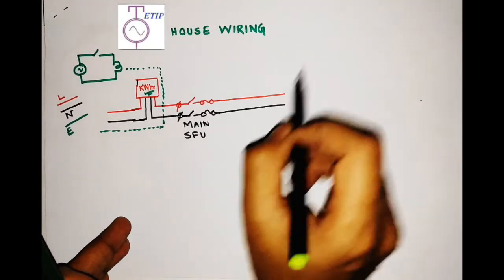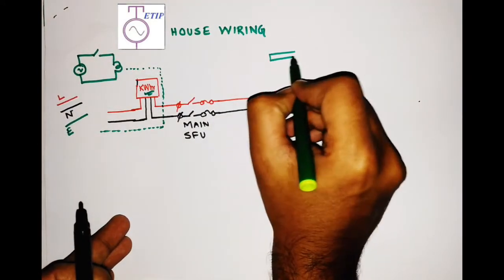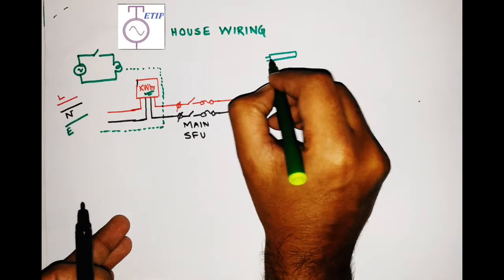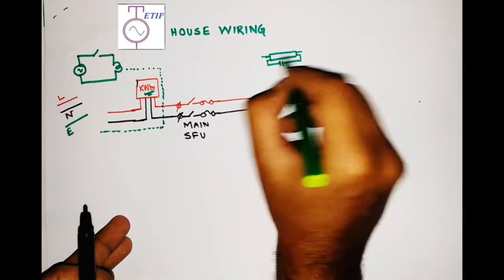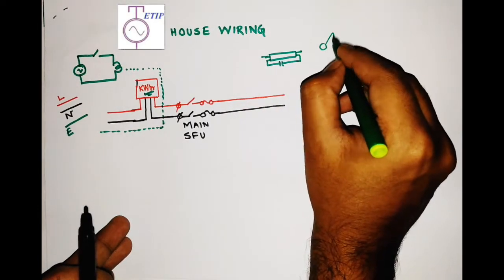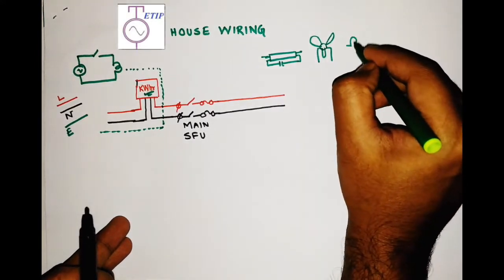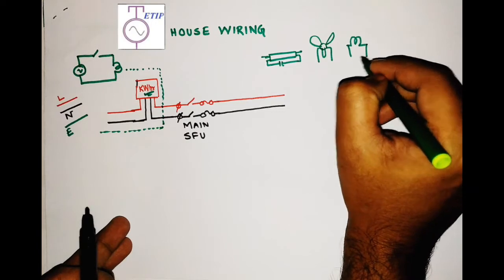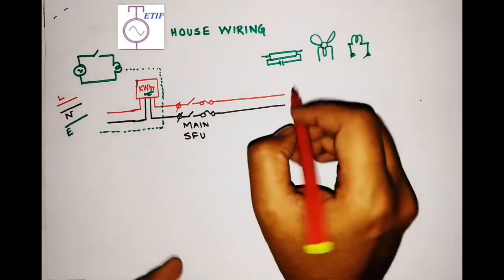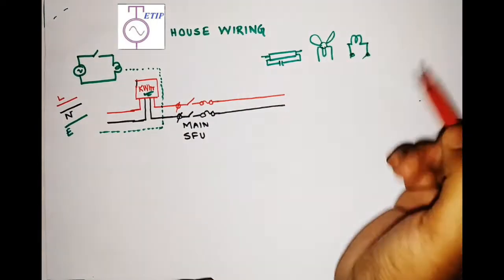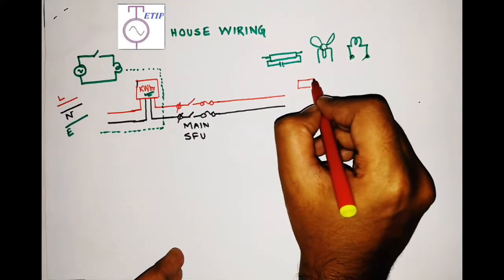In a room you have one tube light with two supply terminals connected to a starter, leaving two terminals. One fan also has two terminals, and one bulb also has two terminals. We have to make the wiring for these connections. Take the line and neutral to this room.